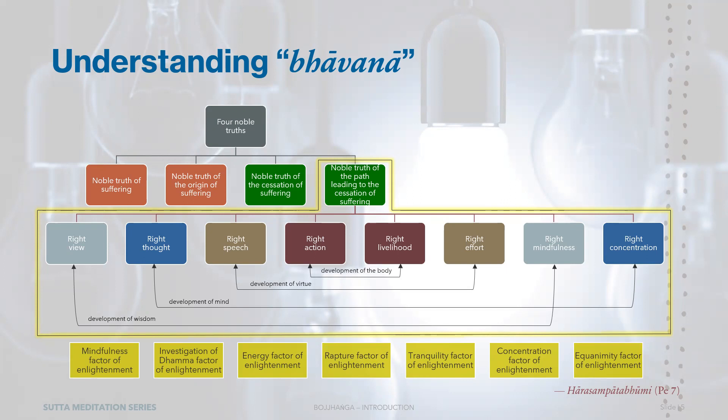In the Virada Sutta, the Buddha stated: 'Bhikkhus, those who have neglected the Noble Eightfold Path have neglected the Noble Path leading to the complete destruction of suffering. Those who have undertaken the Noble Eightfold Path have undertaken the Noble Path leading to the complete destruction of suffering.' So this is one meaning of the path — as in the fourth Noble Truth, the path leading to the cessation of suffering. This is what we are meant to develop when we meditate.